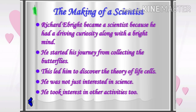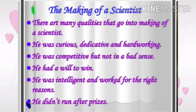Dear students, this lesson is very important as it tells about the making of a scientist. Richard Ebright became a scientist because he had a driving curiosity along with a bright mind. He started his journey from collecting butterflies, which led him to discover the theory of life cells. He was not just interested in science; he took interest in other activities too. There are many qualities that go into the making of a scientist: he was curious, dedicated and hardworking. He was competitive but not in a bad sense — he had a will to win. He was intelligent and worked for the right reasons. He didn't run after prizes.